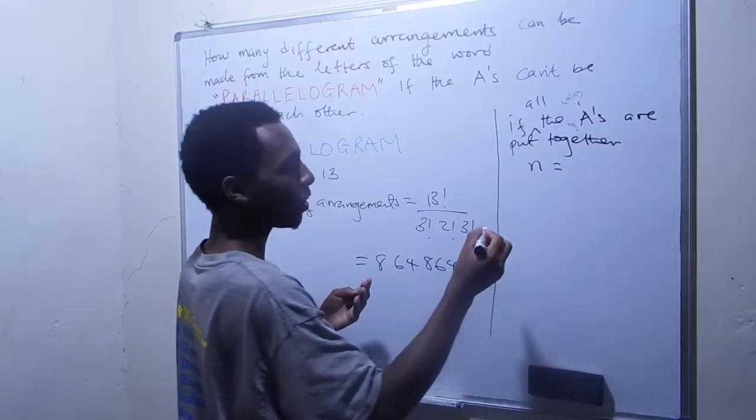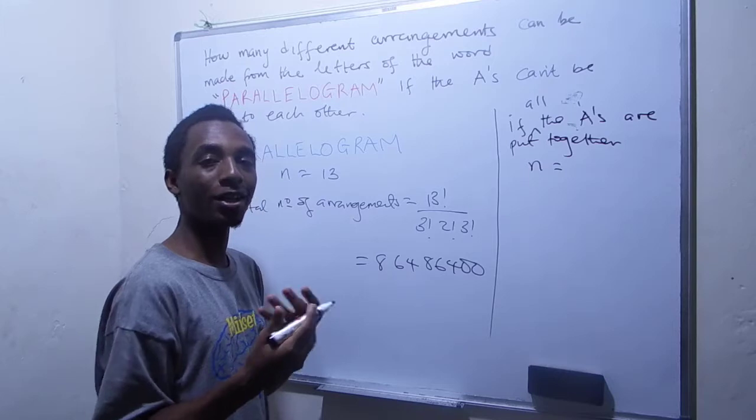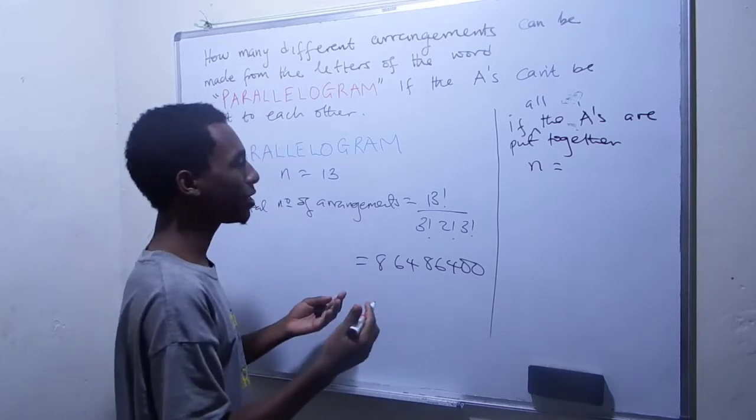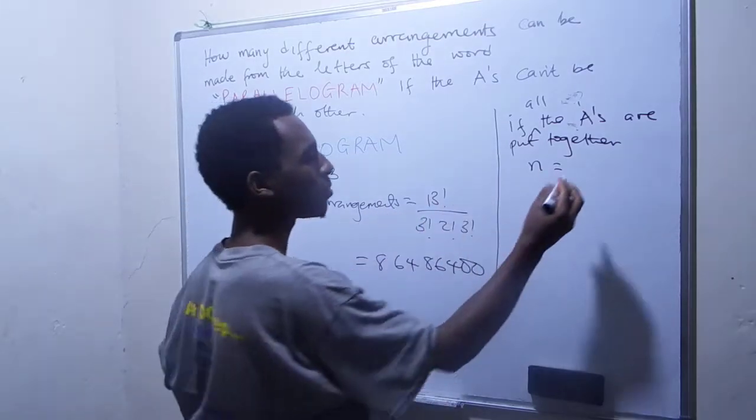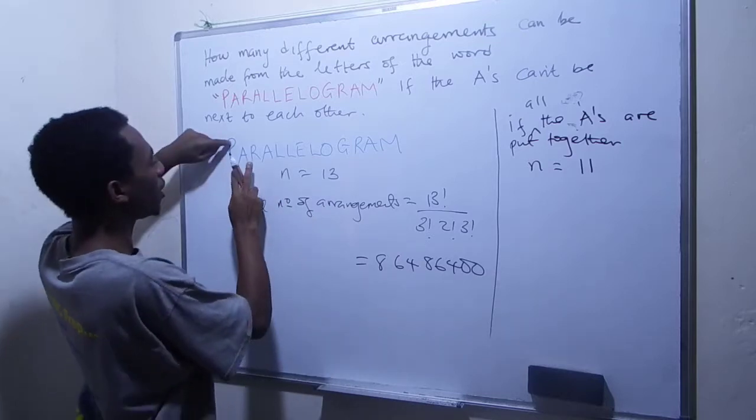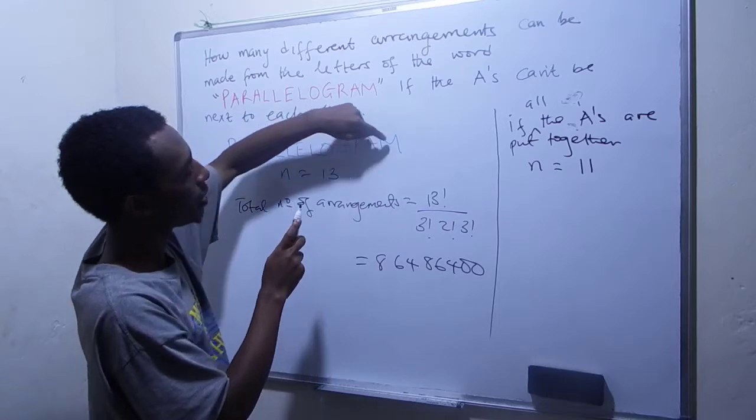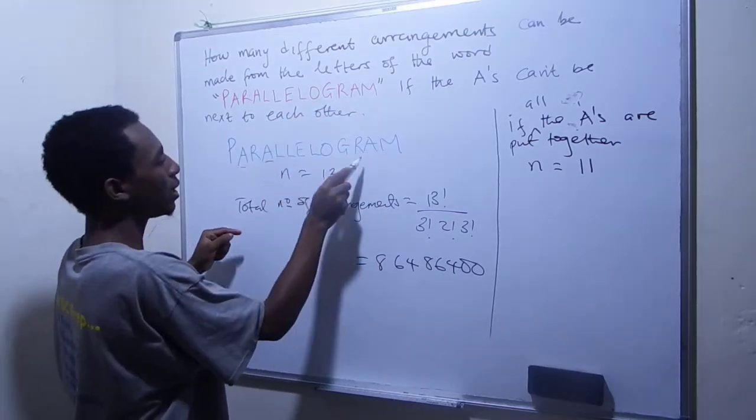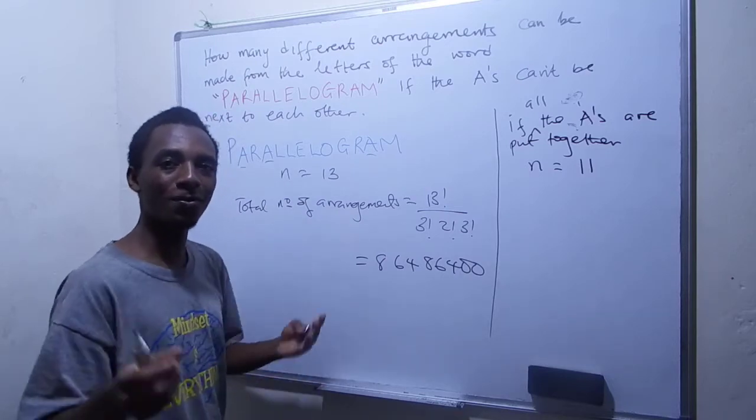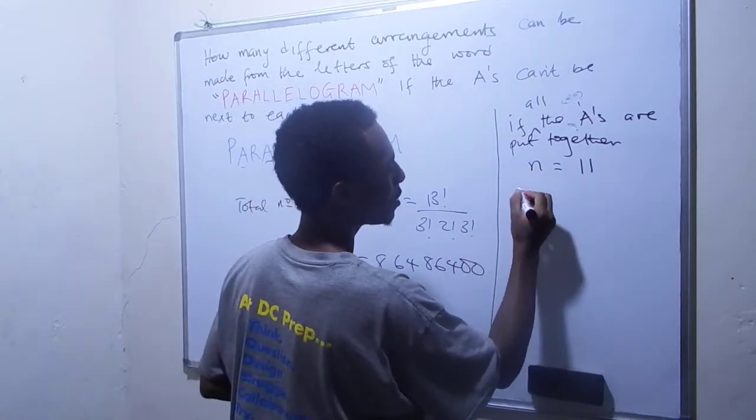It doesn't really matter where they are, but if we put them together, we can count them as just a single item. And so our total number of items is going to remain 13, but because the A's are put together and we can't really distinguish which is which, we'll just be carrying them together as one item. So the total number of items reduces to 11. Let me show you. So I'll count without the A's. So I have one, two, three, four, five, six, seven, eight, nine, 10. And then all these A's are put together to form the 11th item because they'll be moving together as we form different arrangements.